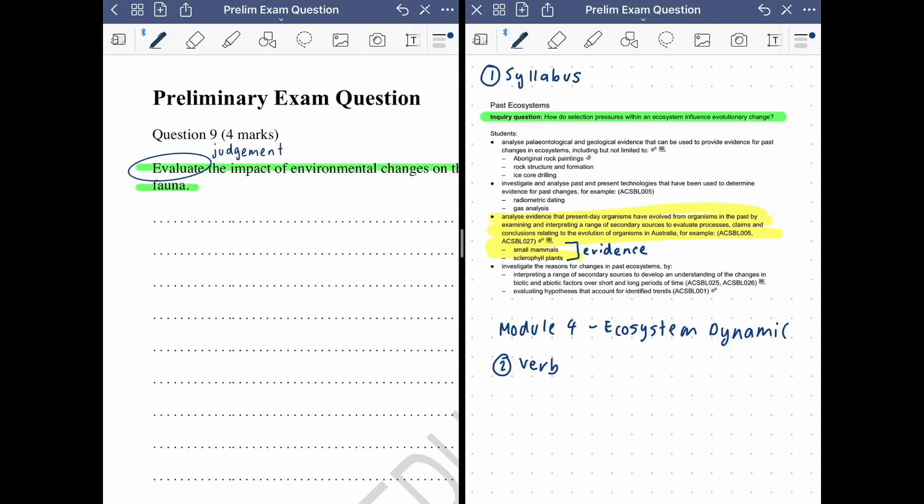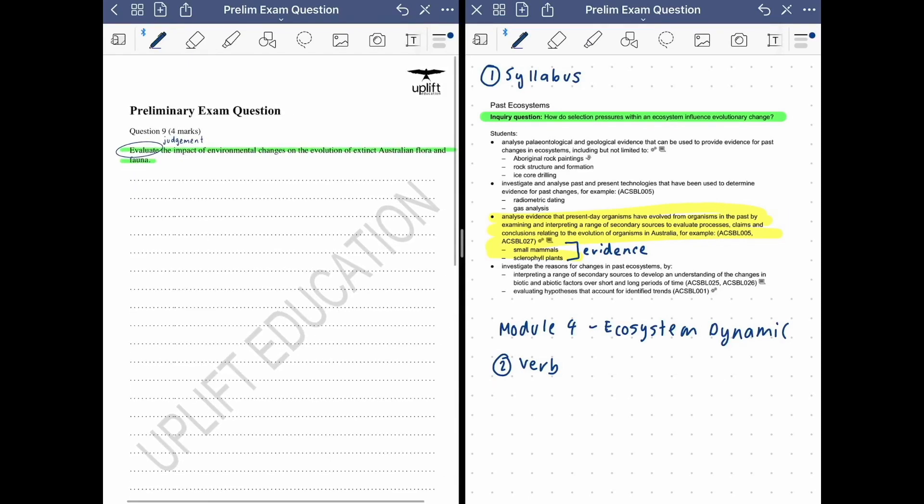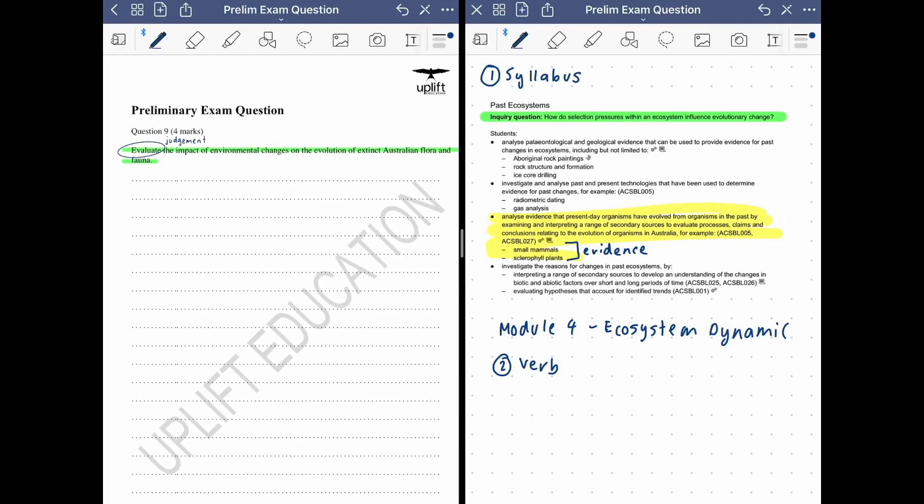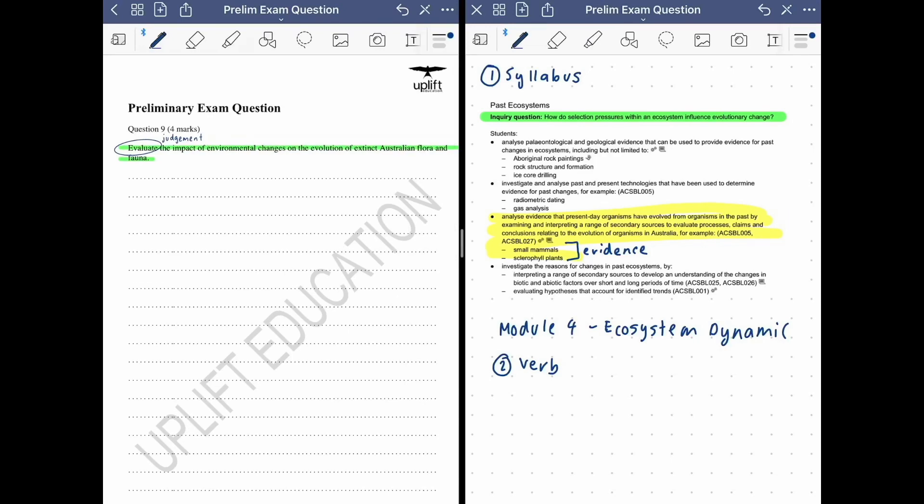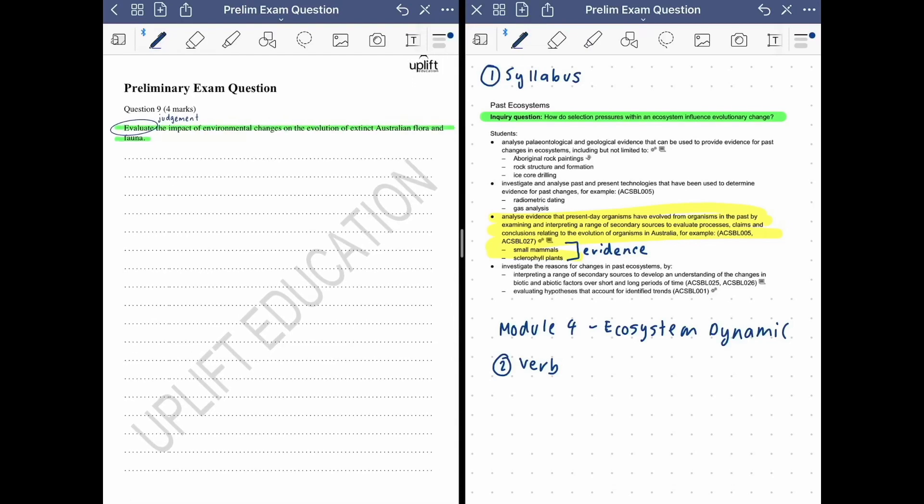By looking at the verb, you guys will be able to know what the question is asking of you and then specifically answer it. So for example, evaluate is different to an explained question. Evaluate you need to give reasons to actually show your judgment, looking at the overall impact of environmental changes and how it has changed Australian fauna and flora. Whereas for an explained question, explain is cause and effect. So in that response, it would show what caused the change and then how that affected the flora and fauna. But since this is an evaluate, it needs to provide reasons.